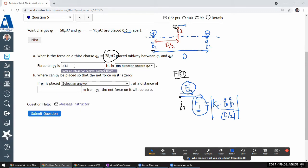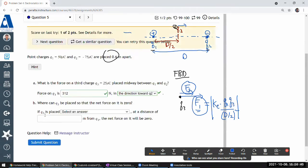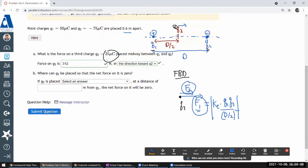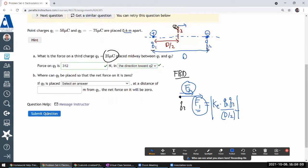All right, that's a fairly reasonable amount of force, which is usually not how this goes. Okay, and it asks where can Q3 be placed so that the net force on it is zero?